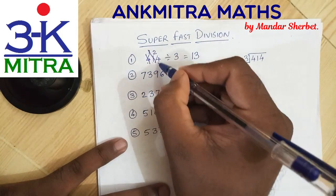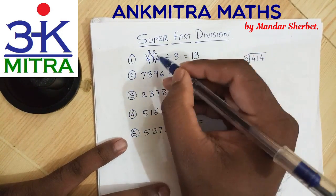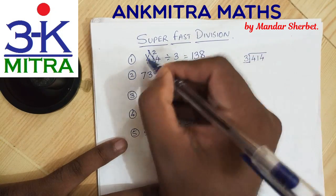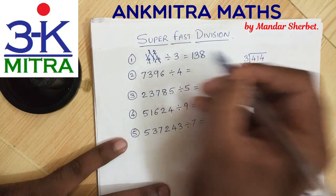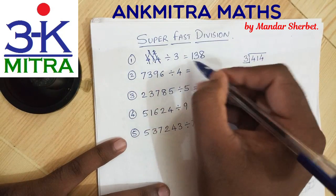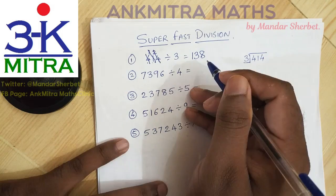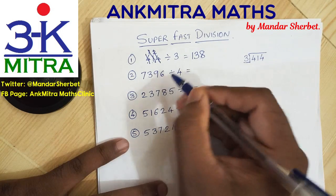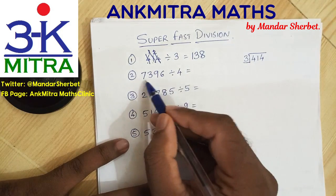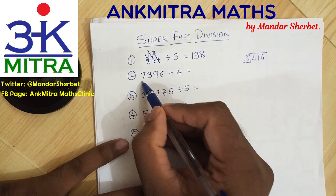3 times 3 is 9. Subtracting 9 from 11, the number remaining is 2. The final number we have is 24. 8 times 3 is 24, so we write down 8 in the answer. This 24 cancels out and the entire number is divided. The final answer is 138.